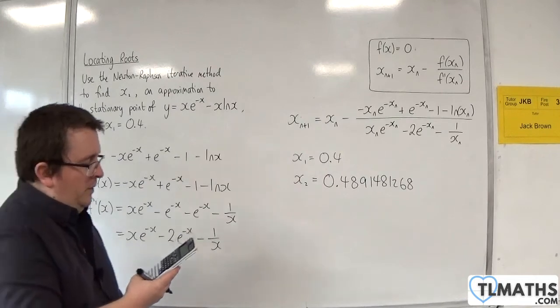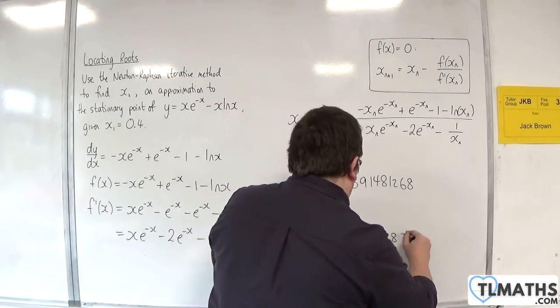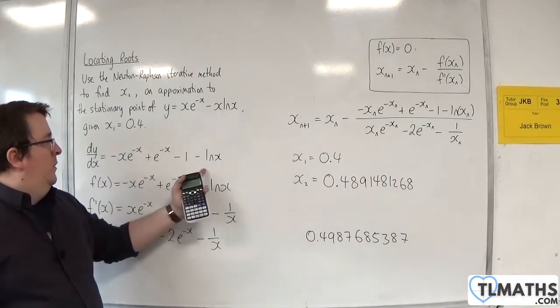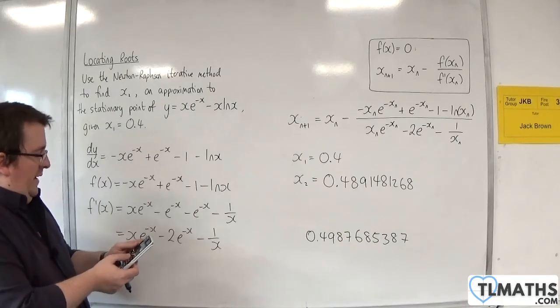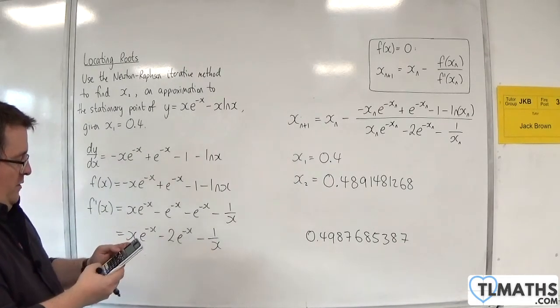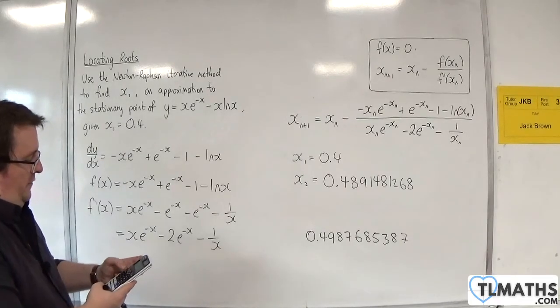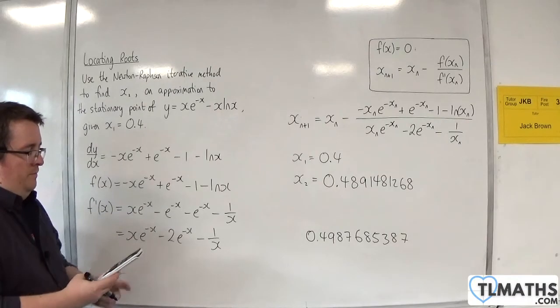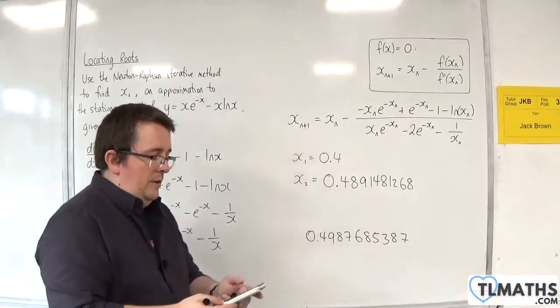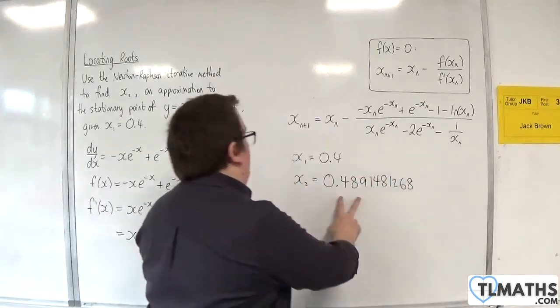Now I'm going to keep on pressing equals, and I appear to be homing in on 0.4987685387. Now what I'm going to do is I'm going to use my calculator's solve function, and I'm going to put this equal to 0 and solve it. So minus x e to the minus x plus e to the minus x take away 1 take away the natural log of x, put that equal to 0. So alpha calc equals 0, then shift solve. Now I'm going to put 0.4 in as my starting point, and we get 0.4987685387. And so that confirms the result. So everything should be fine. And so that is the x2 that I wanted to find.